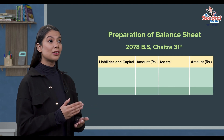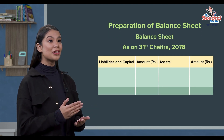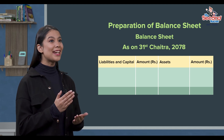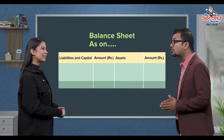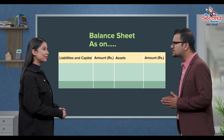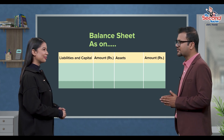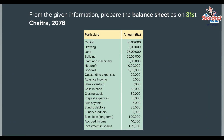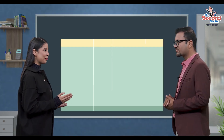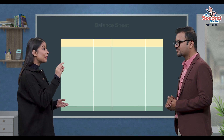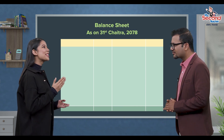Alright, teacher. Write the balance sheet as of 31st Chaitra 2078, like numbers, right? Correct! Now, how to arrange a balance sheet — let's look at an example. So, let's go to the board. In this information, the 31st Chaitra 2078 balance sheet is ready.